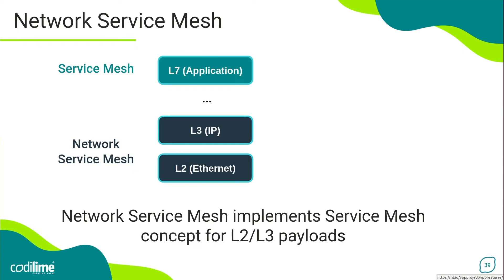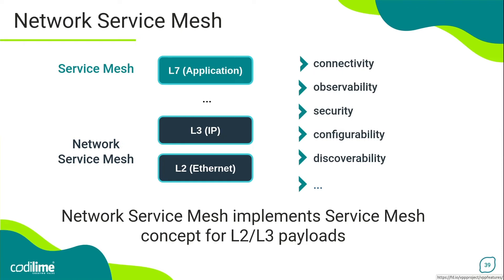For that purpose, network service mesh was created. It maps the service mesh concept onto layers 2 and 3, giving workloads much finer-grained control over the lower-level networking stack and simplifying the usage of such low-level features. Worth highlighting is that network service mesh is not just another service mesh implementation, but instead an orthogonal solution which can interact and work well with existing service meshes. Similarly, it does not replace Kubernetes standard networking or the CNI plugin of choice, and works in parallel to it. Network service mesh intends to offer connectivity, observability, security, configurability, and discoverability for lower layers, focusing on the processing and forwarding of frames and packets.